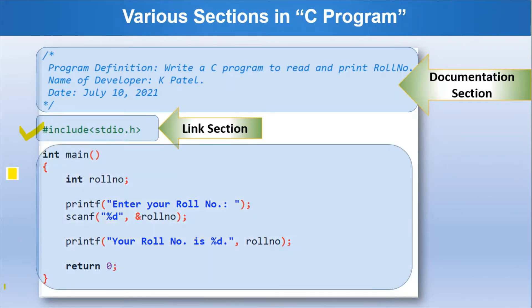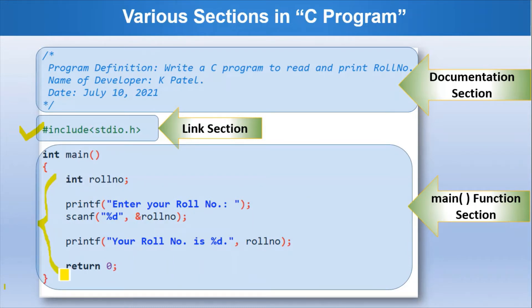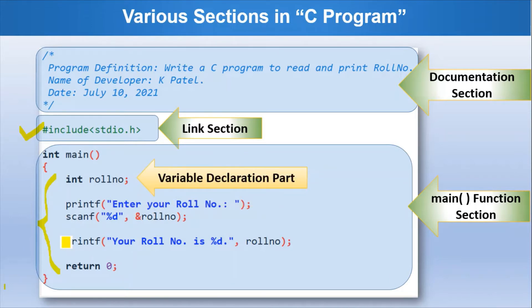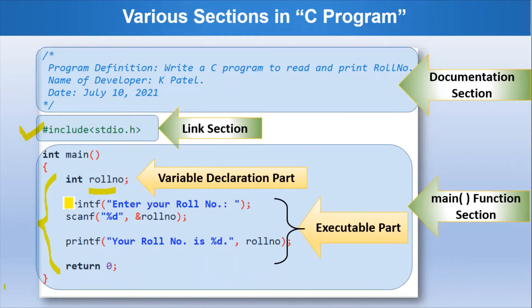Next is the main function section where we write the logic of the program. In our program, we want to read and print the roll number of a student. This is the logic to read the roll number from the user, and this is the logic to print the roll number. This main function section is further divided into two parts: the variable declaration part where we declare all variables, and the executable part where we write our key logic related to execution.